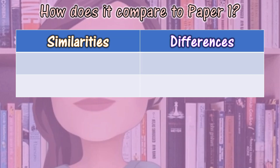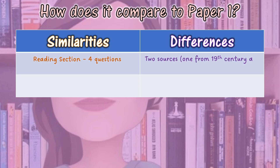So how does Paper 2 compare to Paper 1? Let's look at some similarities and differences. The first similarity is there's a reading section with four questions. However, a main difference is these four questions are in relation to two sources rather than one. One source is from the 19th century — which is the 1800s — and one source is from the 20th to the 21st century, so relatively modern-day texts.